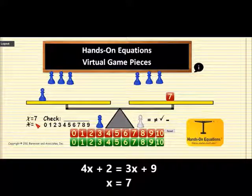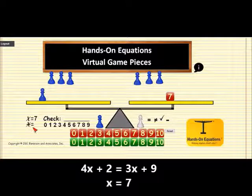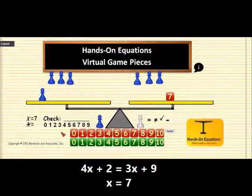Now in this problem, we don't need to find the value of star. Star is introduced in level 2. That's the white pawn. And the green cubes are used in level 3 to represent a negative constant.